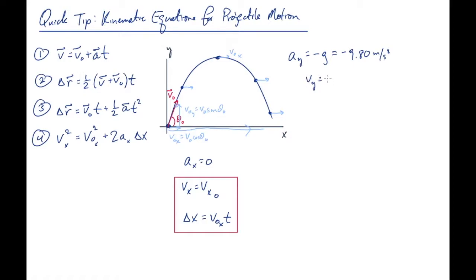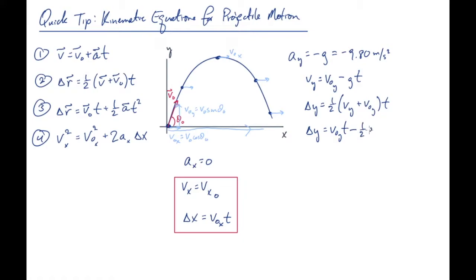In the y direction, substituting ay equals minus g gives these four equations. The first and the fourth tell us about the y component of velocity, which changes constantly in the negative y direction — it's always increasing downward. The second and the third tell us about the vertical component of displacement.